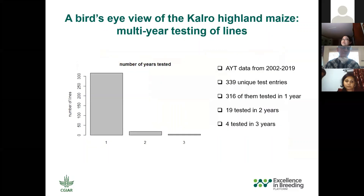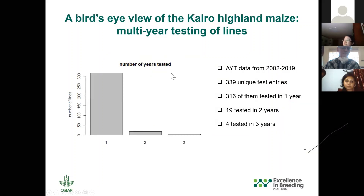Here's another feature in the big picture of the program. I wanted to know how many years worth of data on average you have for a particular hybrid being tested in the program. What we found was that in the advanced yield trial data over the 17 years, the program has tested 339 unique entries, but the vast majority were only tested in one year, and a few were tested in two or three years. This is not ideal for trying to see if there is a genetic trend of improvement.